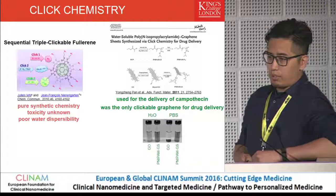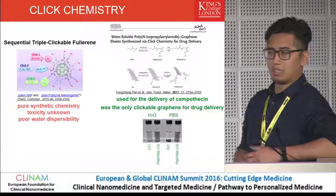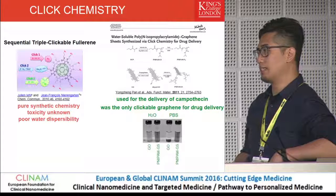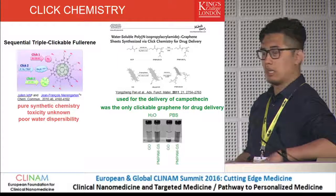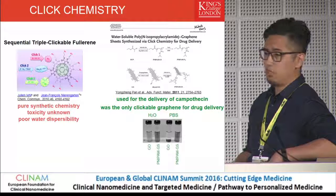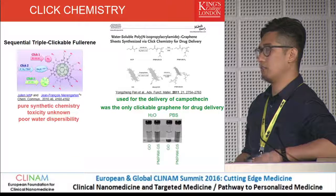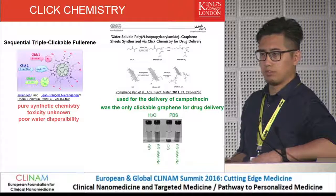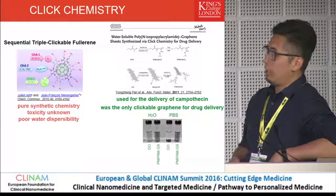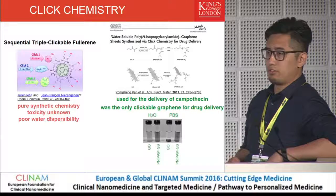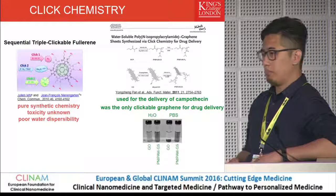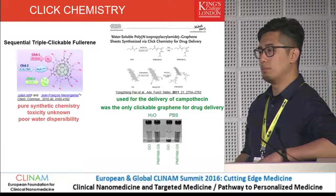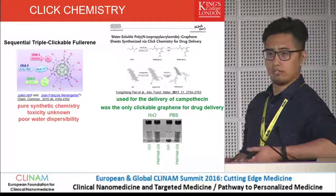There have been reports in the literature where people have tried triple click chemistry for arrangements. The first and second click were done by copper-catalyzed azide-alkyne cycloaddition, and the third by thiol-alkyne coupling reactions. But it was fully chemical work and didn't test any toxicities. Also, the material is not water-dispersible, so it was a very pilot study. Later on, people tried to use click chemistry on graphene materials, but before we started the project, there was only one paper using graphene with alkyne to create water-soluble polymers to deliver anti-cancer drugs.